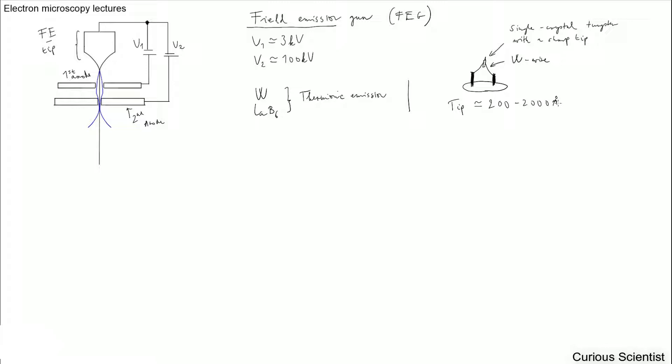And this is a very bright source. So let's make this as an advantage. So it's very bright. The current density is about 10 to the sixth power ampere per square centimeter. So that's a very high value.